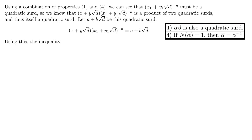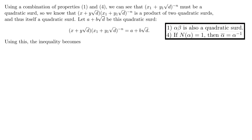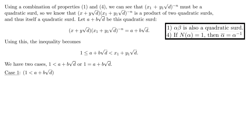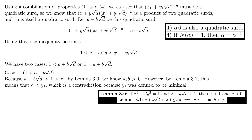Dividing by x1 plus y1 square root of d to the n gives: 1 is less than or equal to x plus y square root of d times x1 plus y1 square root of d to the minus n, which is less than x1 plus y1 square root of d. Using properties 1 and 4, x1 plus y1 square root of d to the minus n is also a quadratic surd, so the middle term is a product of two quadratic surds, also a quadratic surd. Let a plus b square root of d denote this surd. Substituting gives: 1 is less than or equal to a plus b square root of d, which is less than x1 plus y1 square root of d. We now have two cases: one is less than a plus b square root of d, or one equals a plus b square root of d. In the first case, since a plus b square root of d is greater than 1, by Lemma 3.0 a and b are greater than zero. But by Lemma 3.1 this means b is less than y1, which is a contradiction since y1 was defined to be minimal.